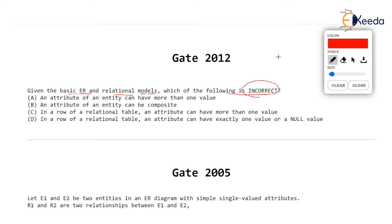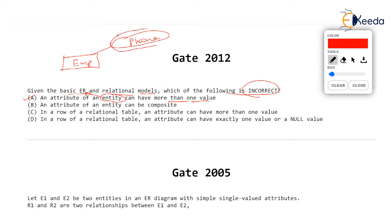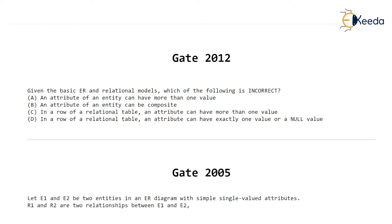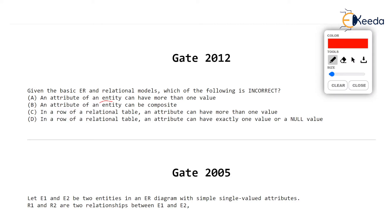In GATE 2012, the question asks: given the basic ER and relational models, which of the following is incorrect? Option A: an attribute of an entity can have more than one value — this is true, as an employee entity can have multiple phone numbers, shown as a double ellipse (multi-valued attribute). Option B: an attribute of an entity can be composite — this is also true, for example, a name attribute can be composite with first name and last name.